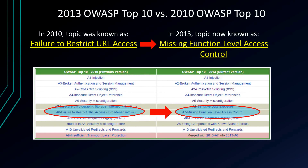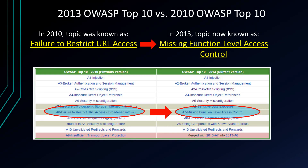I wanted to take a look at the 2013 list versus the 2010 list. There are a few changes, but specifically for this topic, in 2010 it was known as Failure to Restrict URL Access, and in light of some of the attacks and the parameters involved, they decided to change that terminology. It's now known as Missing Function Level Access Control.